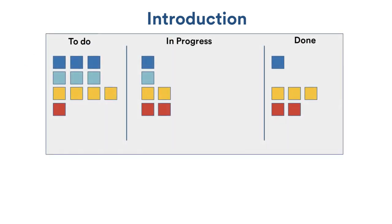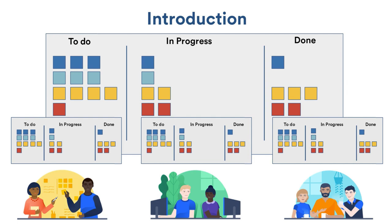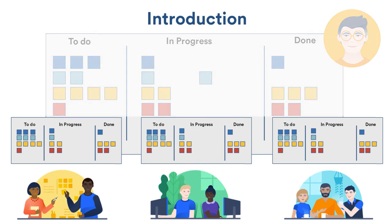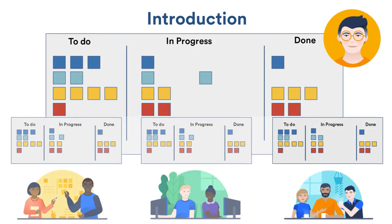Each team had their own physical version of these poster boards. On each poster board, they would attach post-it notes under columns that read: to do, in progress, and done. Every few days, they would have video conference calls where the project lead would say, 'Okay, everybody move this post-it note from to do to in progress.' Line by line, each team would physically move the post-it notes through every column in the workflow. They would do this for every single task completed.